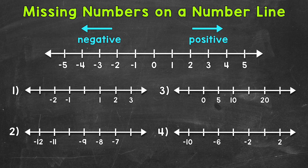We're given negative two and negative one, so there's a distance of one between those two numbers. We're also given one, two, three — so the distance between those numbers is one as well. We can see that we are counting by one. Once we figure that out, we can find the missing numbers by counting up or counting down using that distance. So let's count down from three: three, two, one, and then zero. So we have zero for this missing number here.